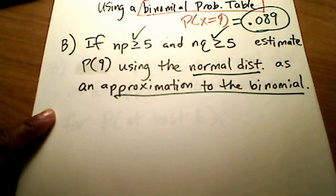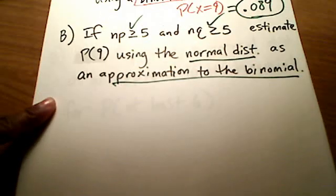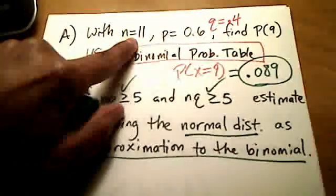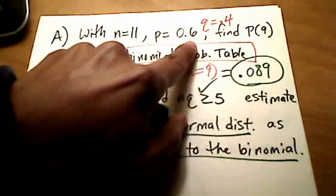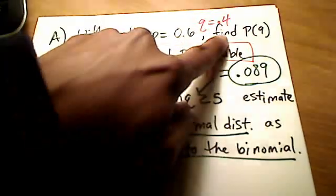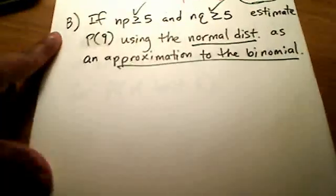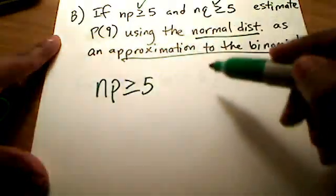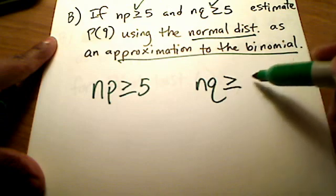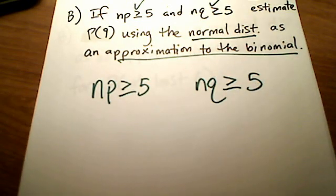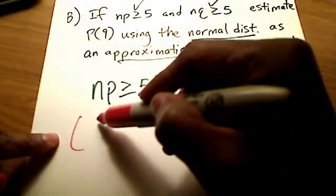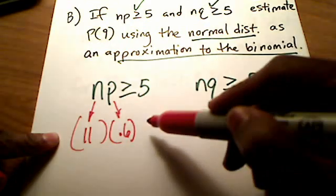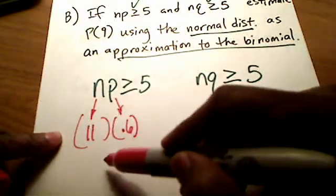You're going to see something that goes awry here — it doesn't quite work. My n was 11, probability of success was 0.6, and probability of failure is 0.4. I need to check if np ≥ 5 and nq ≥ 5. Plugging in, n times p gives 11 times 0.6, which equals 6.6 — and sure enough, that is greater than or equal to 5. That one checks out.